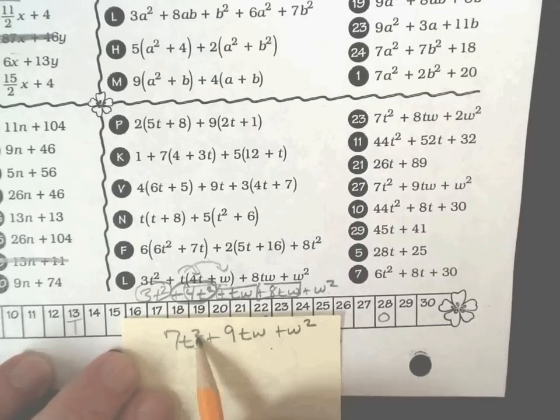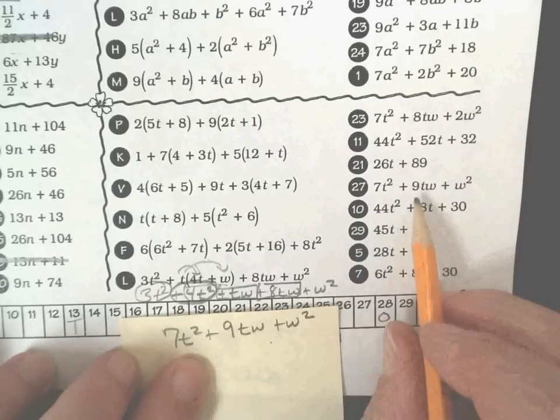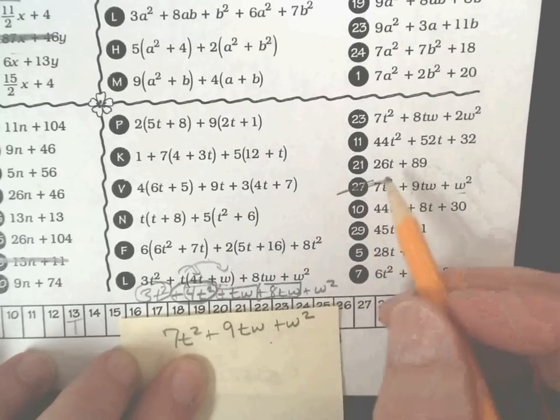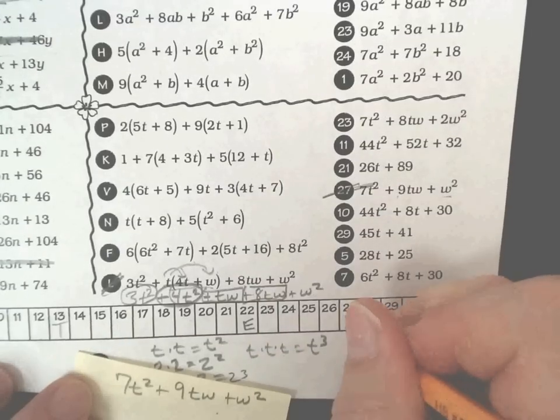Well, it should be up there. Yep, there it is right there. I'm sorry. So 27 is letter L. Okay, I got lost there.